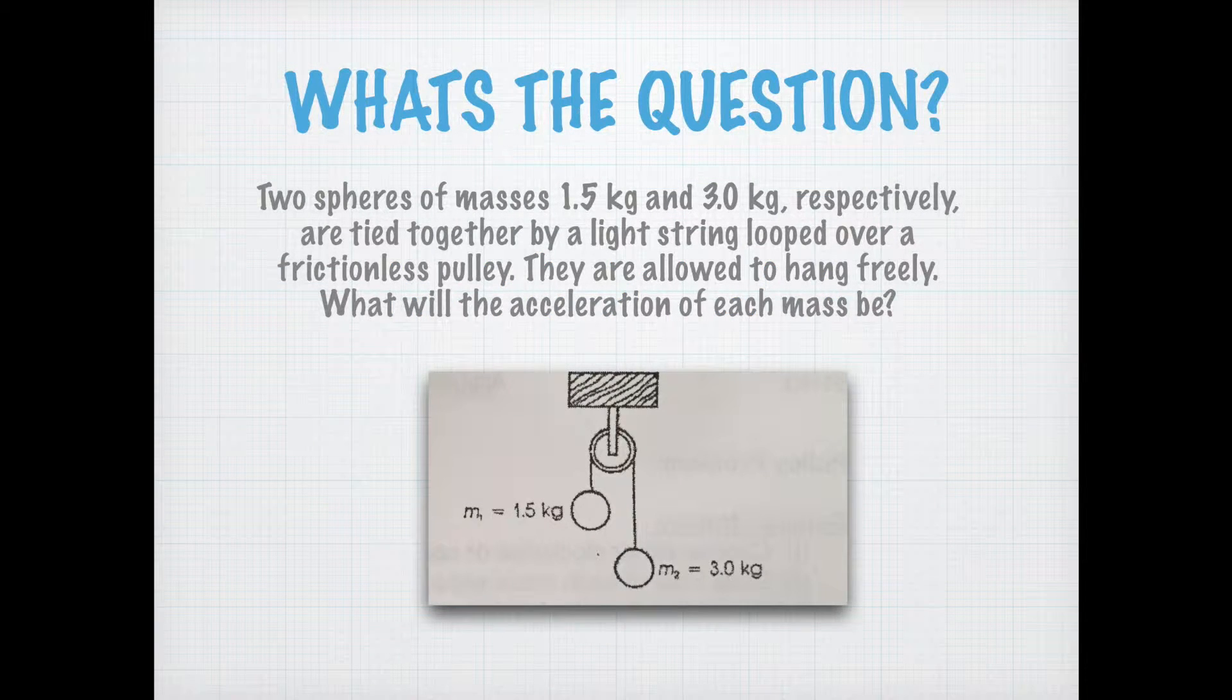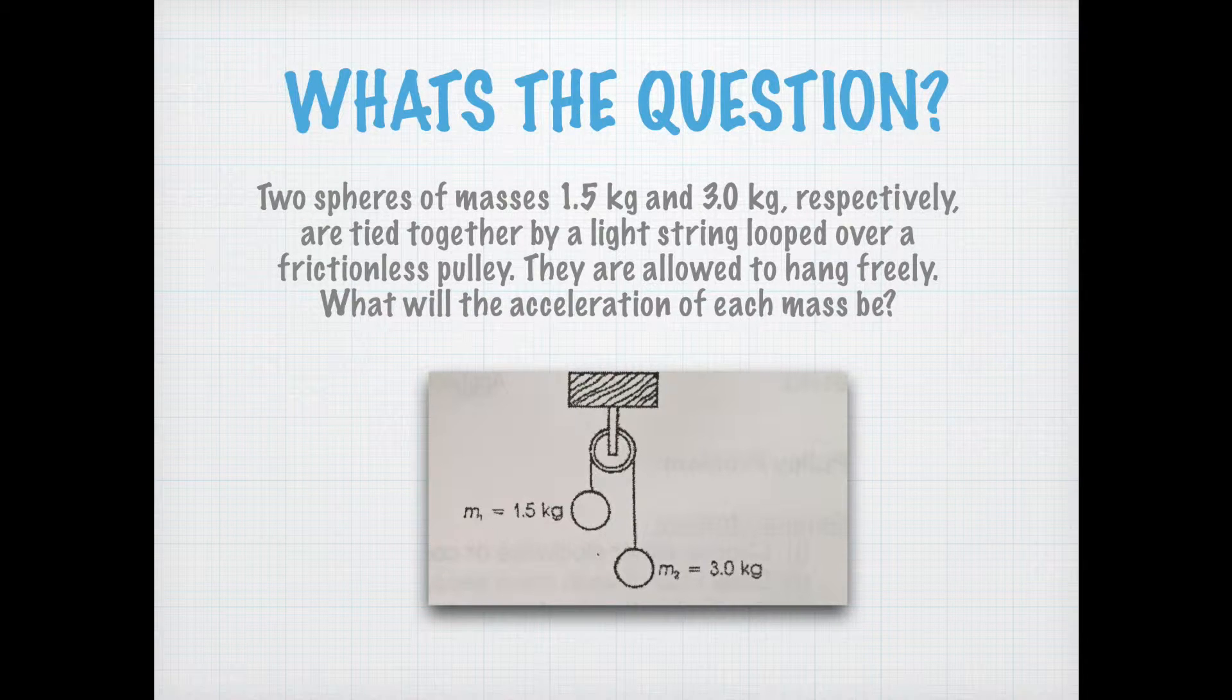Two spheres of masses 1.5 kg and 3.0 kg respectively are tied together by a light string looped over a frictionless pulley. They are allowed to hang freely. What will the acceleration of each mass be?